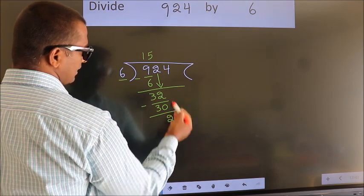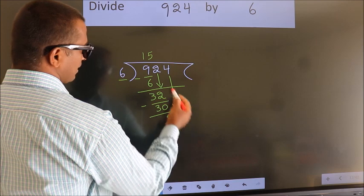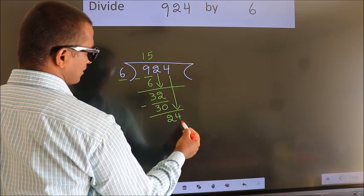After this, bring down the beside number. So 4 down. So 24.